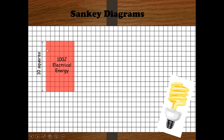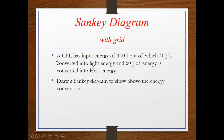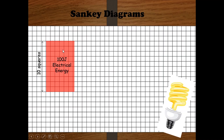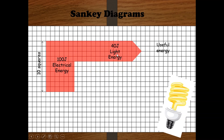Since the input is 100 joule, I take 10 squares, so each square equals 10 joule. For 40 joule of light energy, I count 4 squares — 4 tens are 40. So 4 squares represent the light energy. The remaining 60 joule of heat energy takes up the remaining 6 squares.